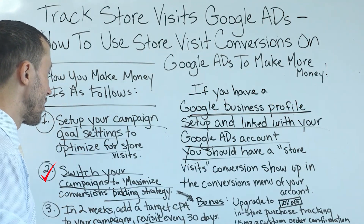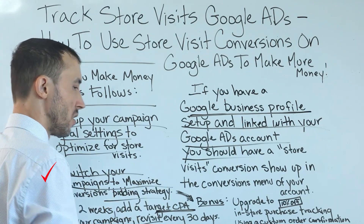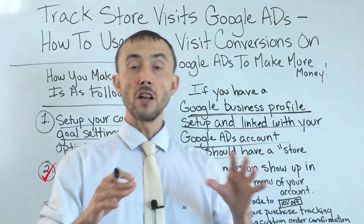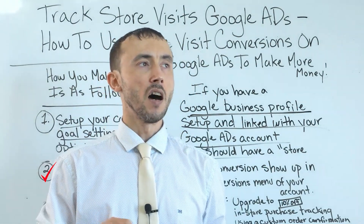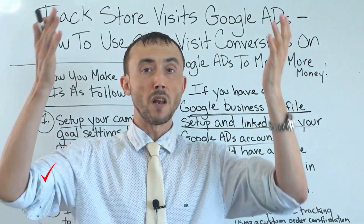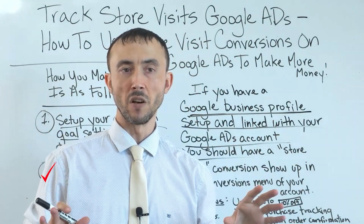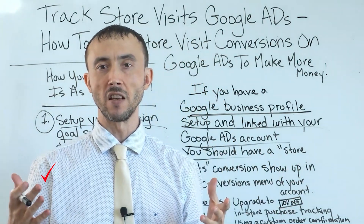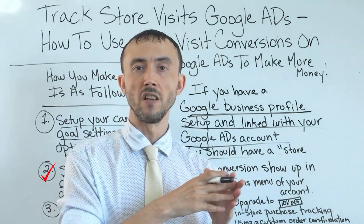Two weeks later, add a target CPA to your maximize conversions bidding strategy to start bringing down the cost you're paying for each store visit. There's a cost per store visit that will be profitable to you, and once you hit it you can maintain it and scale your ads. You'll need to crunch some numbers — figure out average revenue per visit so you know what you need to be paying per store visit as tracked inside your ad account.